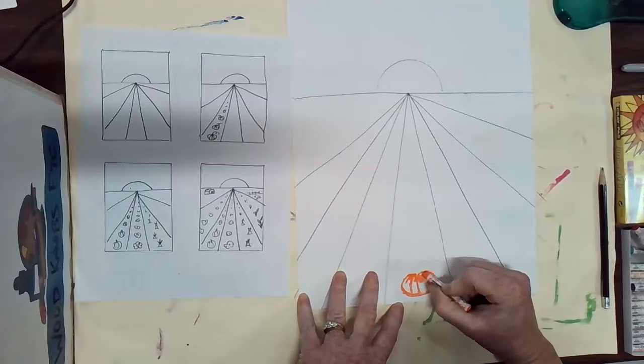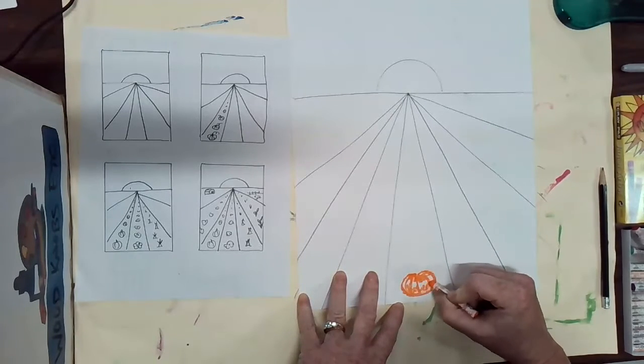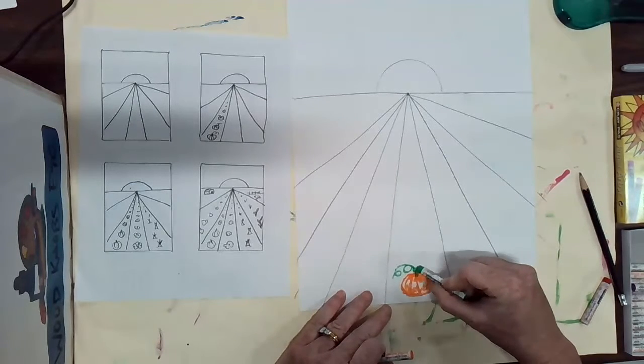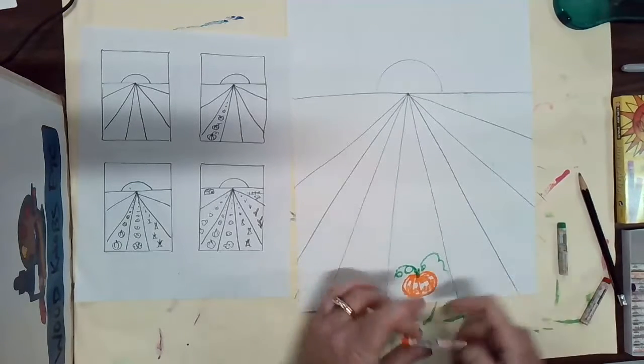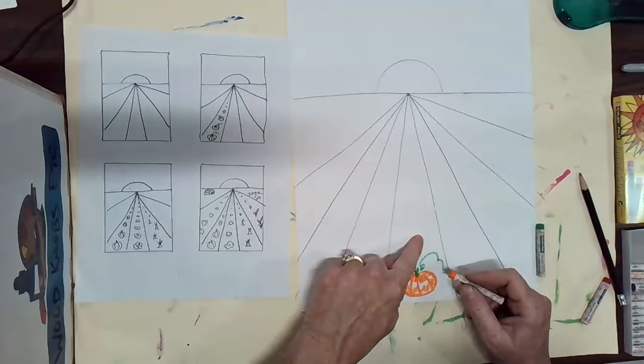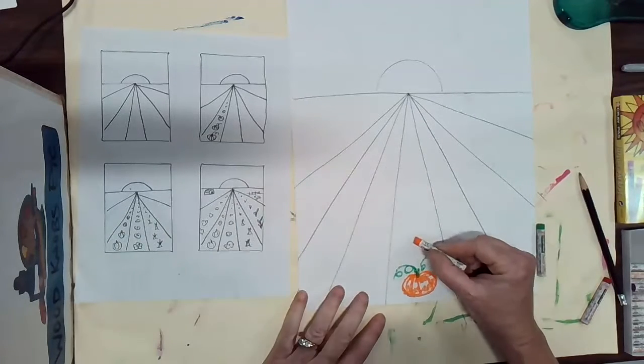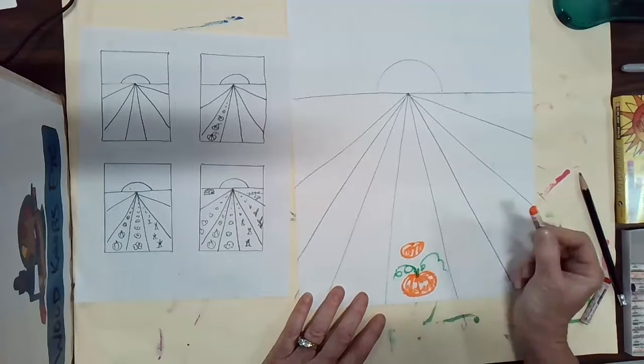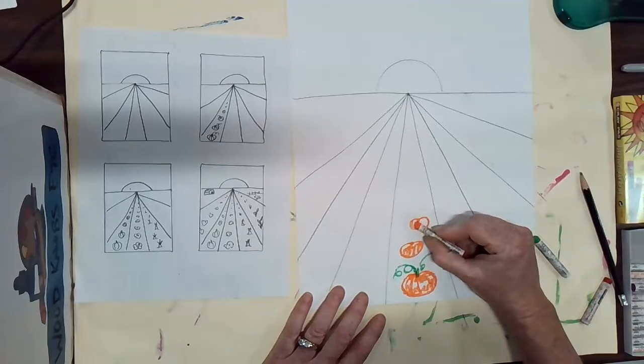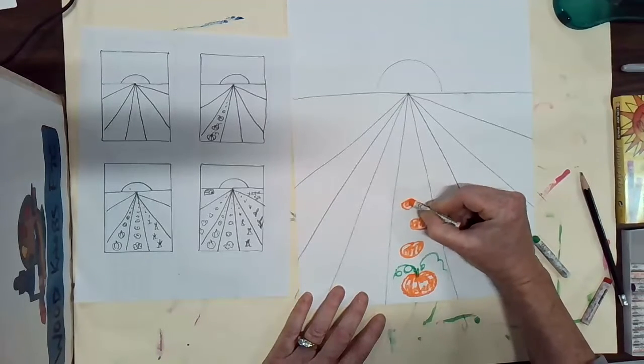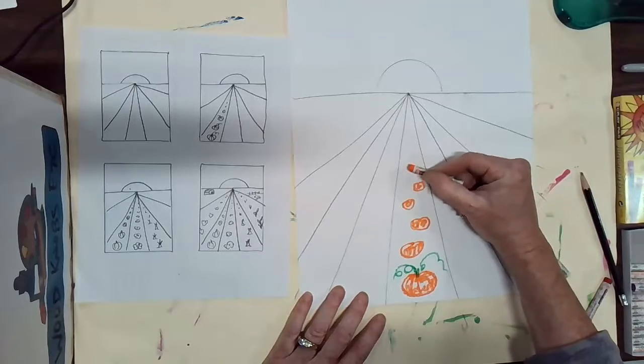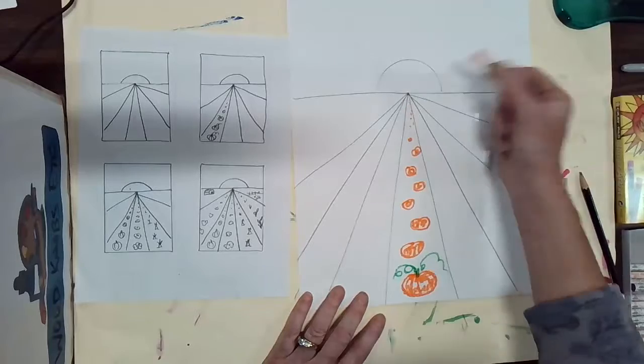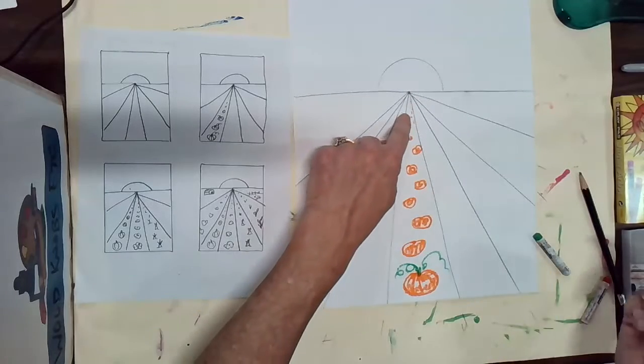You can also see a lot more detail on things that are closer to you. So I might make this pumpkin that has this green stem and some vines and some leaves. And now as things get further away they appear smaller. So my next pumpkin might be a little bit smaller and then my next one might be a little smaller than that and a little smaller than that, and they get less and less detailed as you go further back. And as you get way back there they almost might appear just as little dots.